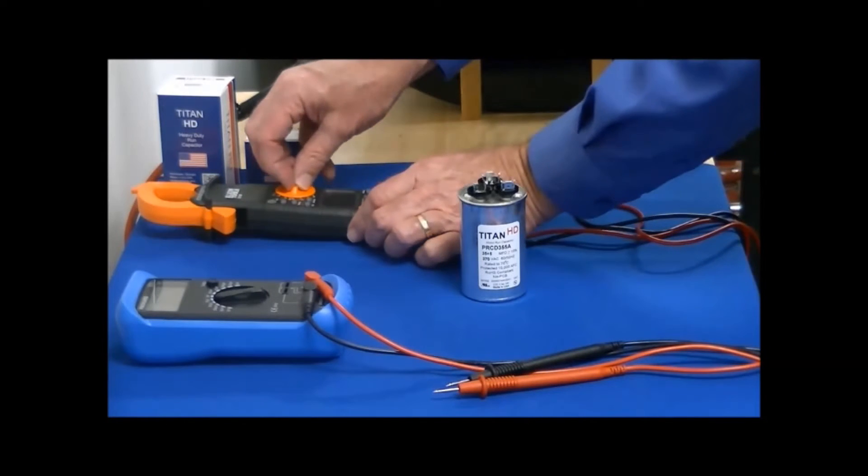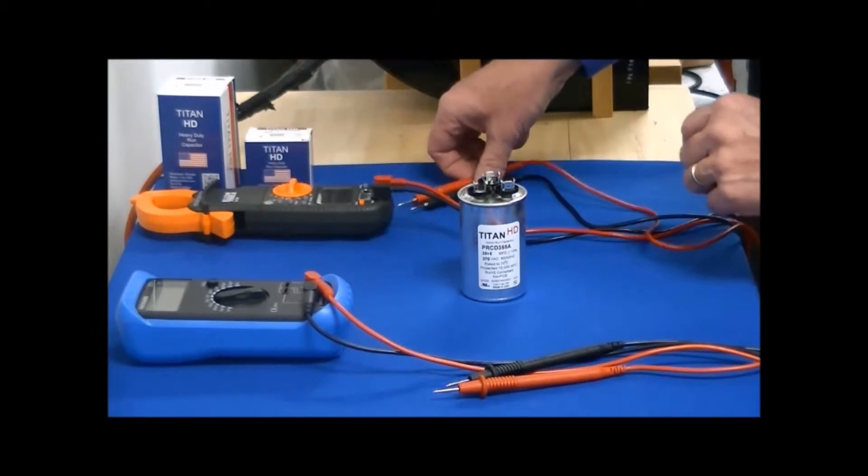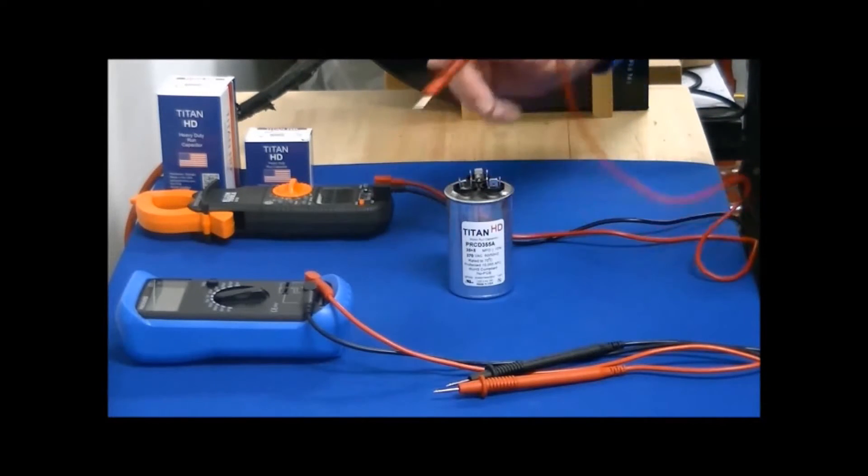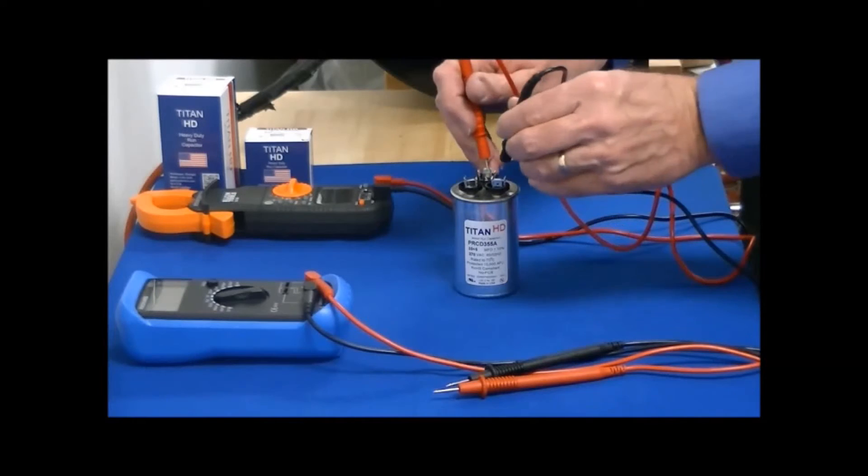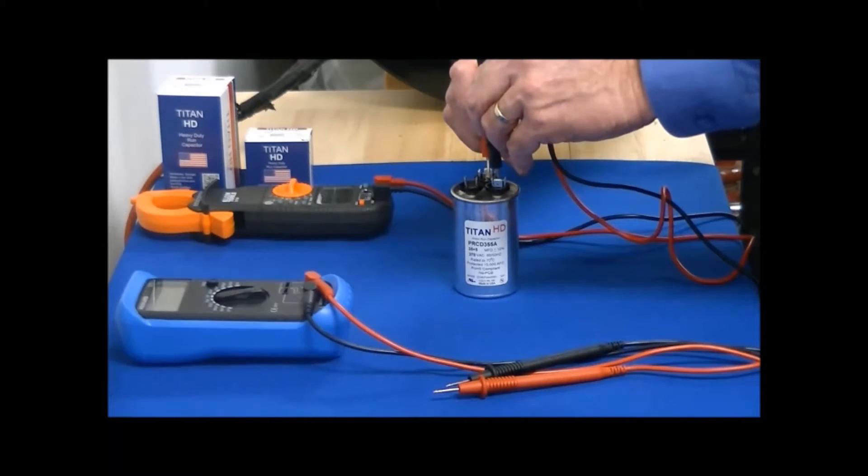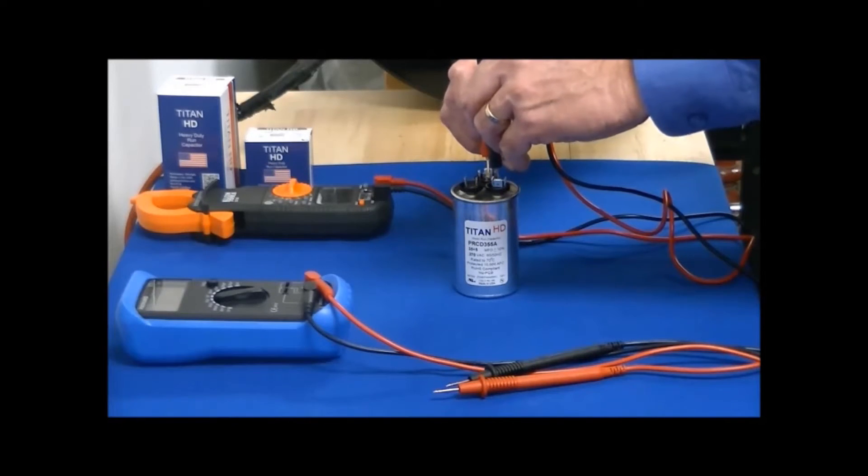On the multimeter, check a two microfarad. Then place one probe, in the case of a dual, on common. The other probe on hermetic, that will give you the microfarad rating for the hermetic side, which will be the highest side. In this case it reads 34.82.